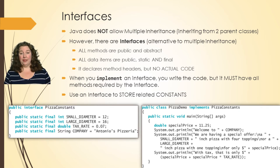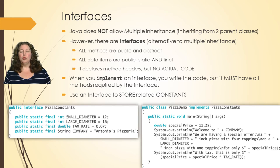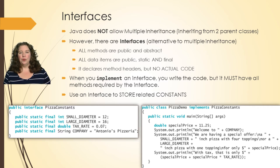With an interface, all the methods are public and abstract. Remember, an abstract method is one that you don't write any code for — you just declare the header. So you have your return value and parameters, but you don't have any code. You have to actually write the code when you implement. Also, all data items are public, static, and final — they don't change.